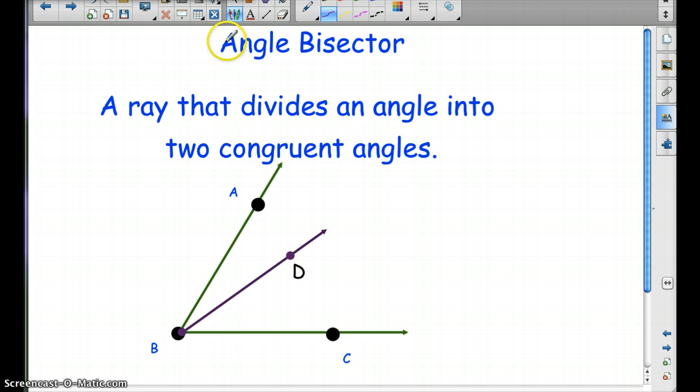Next vocabulary word, sorry I have a lot of vocab in this section, is angle bisector. And you're going to see this over and over and over again throughout this whole course. So you really need to know what bisector means.